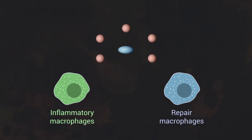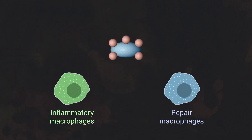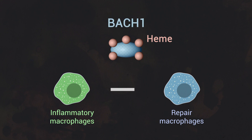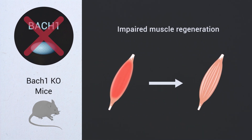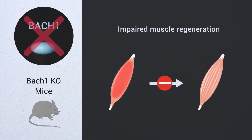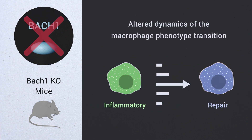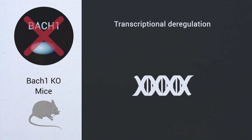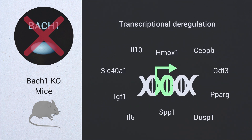We identified a heme-binding transcriptional repressor as a novel regulator of macrophage cell type specification. Bak1 knockout mice displayed impaired muscle regeneration, altered dynamics of the macrophage phenotype transition, and transcriptional deregulation of key inflammatory and repair-related genes.